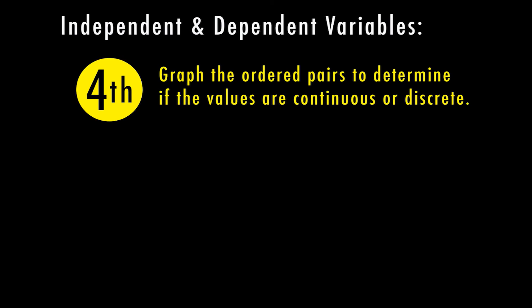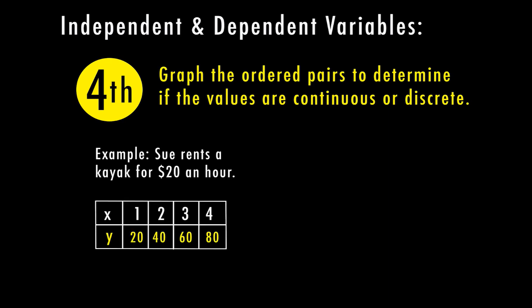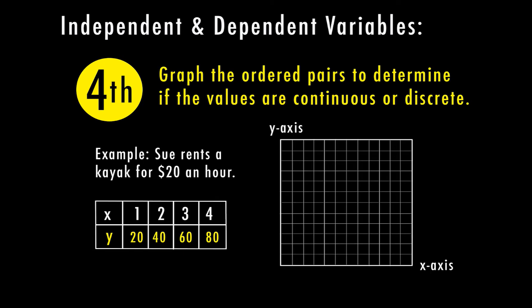For the next part, we're going to graph ordered pairs again and determine if the values are continuous or discrete. We're going back to Sue renting a kayak for $20 an hour. I'll put my origin down here — again all positive values so we're only using quadrant one. I'll label the x axis by ones and the y axis by tens, according to the numbers in my table. On the first hour Sue spends $20, the second hour $40, the third hour $60, and the fourth hour $80.